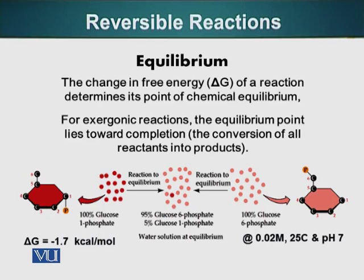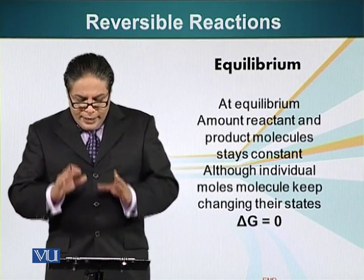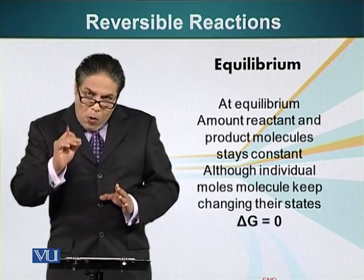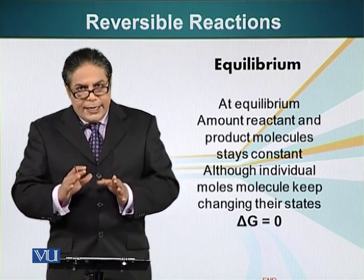This delta G value applies at a specific temperature, molarity, and pH. One might ask: if glucose-1-phosphate converting to glucose-6-phosphate is exothermic, why don't all molecules convert? This is because we are examining the system at a specific temperature, which determines the equilibrium point. To re-emphasize: at equilibrium, the amounts of reactant and product molecules stay constant, although individual molecules keep changing from reactants to products. At equilibrium, delta G equals zero.